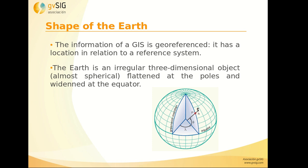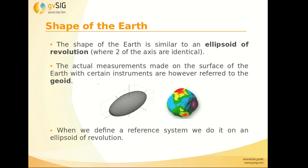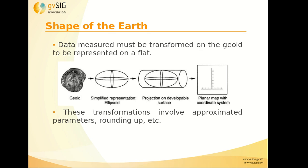We have the cartography, the geographical information of a GIS — we have it georeferenced, so it has a location in relation to a reference system. The Earth is an irregular three-dimensional object and its shape is similar to an ellipsoid of revolution. The actual measurements made on the surface of the Earth are, however, referred to the geoid. So when we define a reference system, we do it on an ellipsoid of revolution. The data must be transformed on the geoid to be represented on a flat surface, so several transformations can be applied for that.